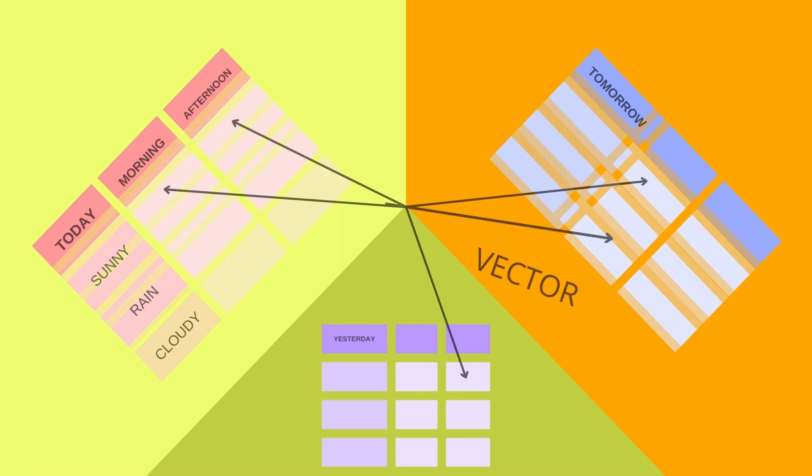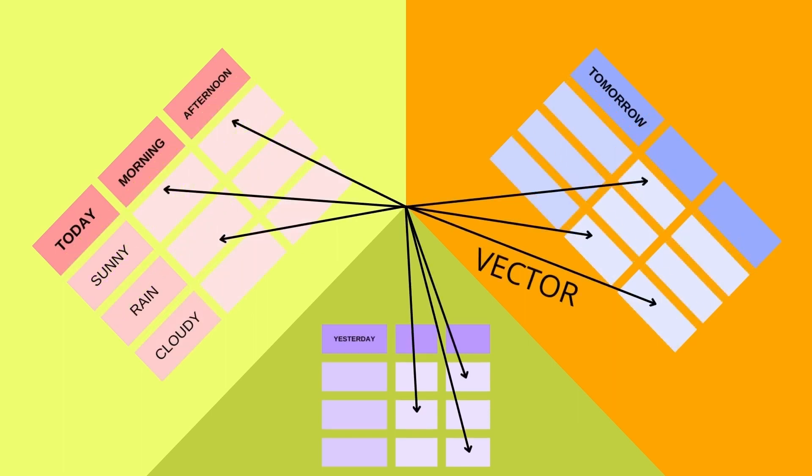You have areas. Yellow is today, orange is tomorrow, yesterday is green, and you have sunny, rain, cloudy, morning, afternoon, and you have places where all these sentences live and where we have a vector pointing to the meaning of the sentences. This is it.